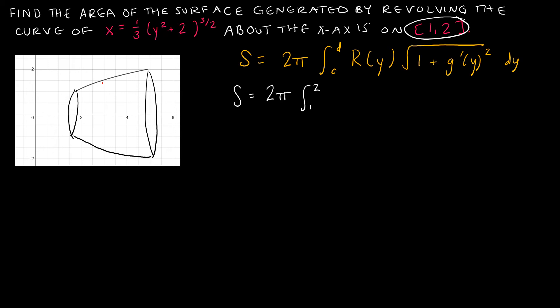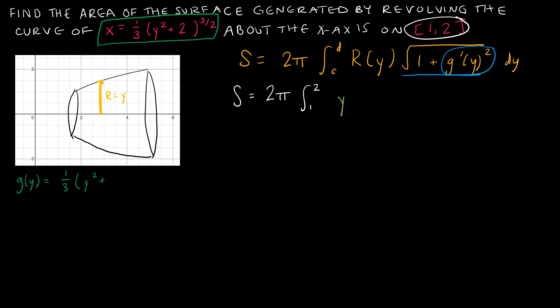For r(y), drawing a horizontal radius line shows that value is just the y-value of the function. Since the function is already in terms of y, r(y) = y. The function given is x = g(y) = (1/3)(y² + 2)^(3/2), and I need to find g′(y) and then square it.